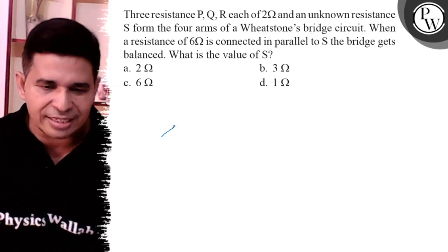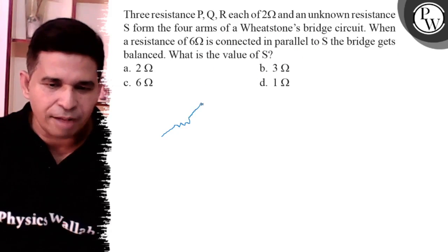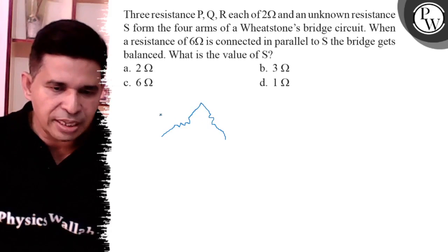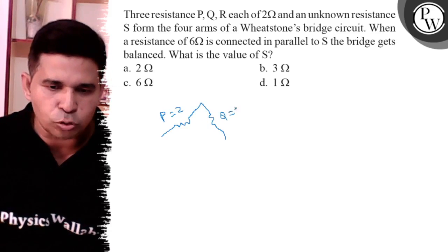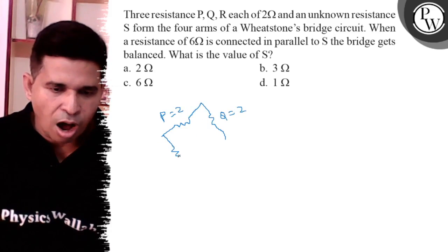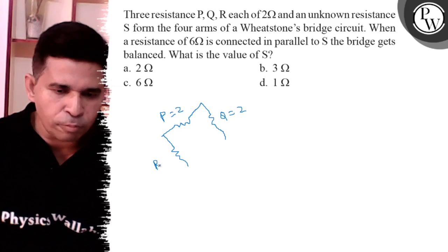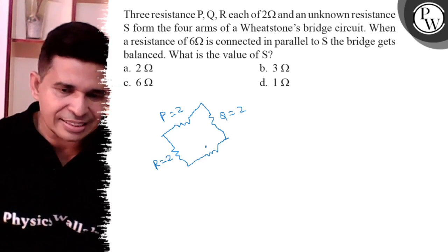We know that first we make the diagram. P is 2 ohm, Q is also 2 ohm, R is also 2 ohm, and this is S.